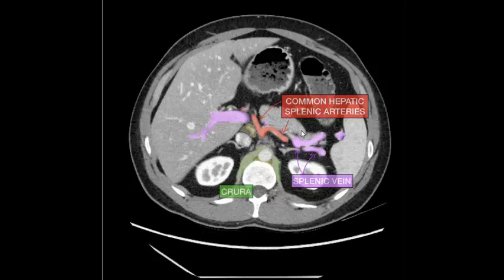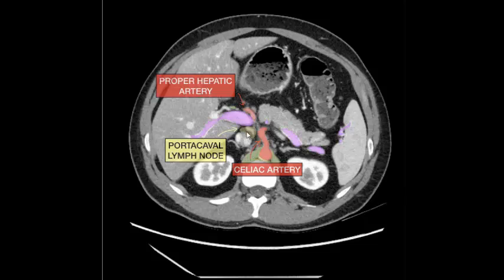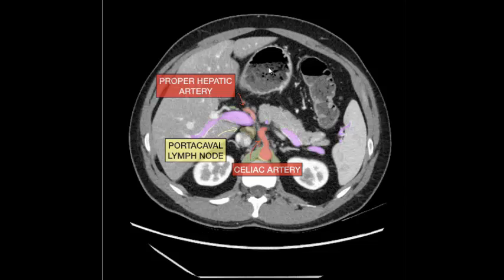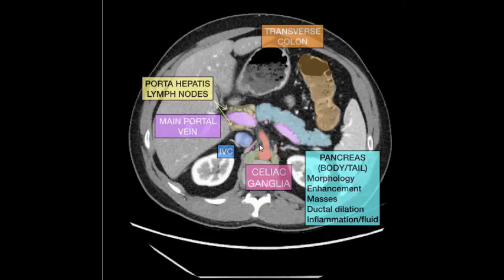Pancreas, body of pancreas. Proper hepatic artery, portal vein, portahepatic lymph nodes, celiac artery, crus of diaphragm, splenic vein, spleen, body of pancreas, tail of pancreas, transverse colon, stomach, portahepatic lymph nodes.